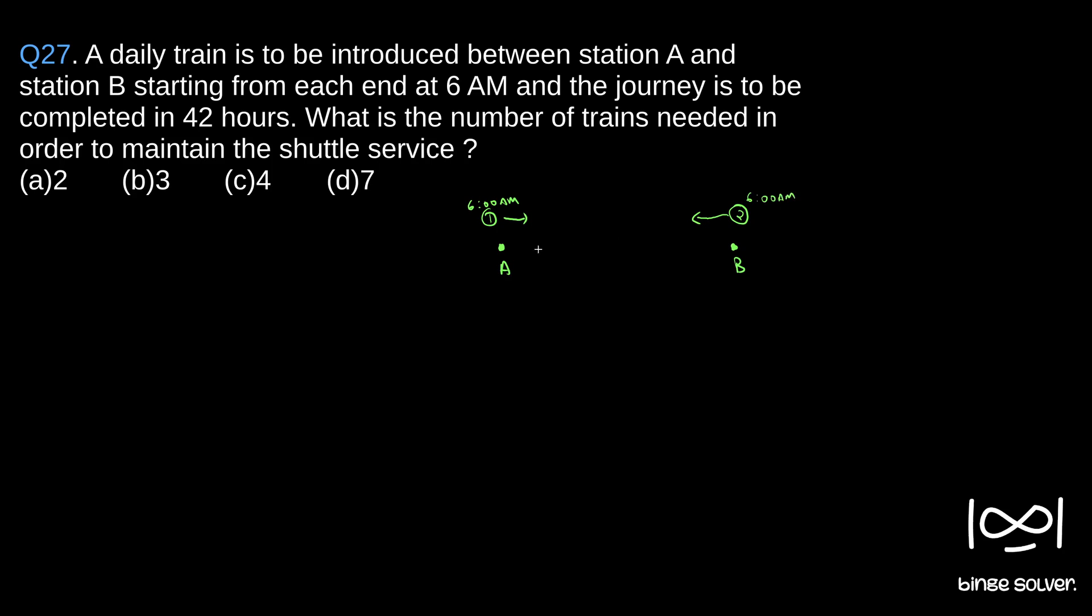So it takes more than one day to reach B. Two days means one day is 24 hours and two days means 48 hours. It does not take two days, but more than one day. So one day and 18 hours it takes to reach from station A to B and station B to A.